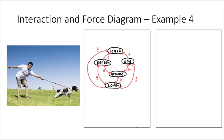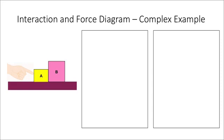If you'd like, you may stop the video here and move on to force diagrams. However, there is a complex example in the next two slides that I would recommend going over if you are able to do so. The next video will cover how to turn all these interaction diagrams into force diagrams. We'll end the video with a more complex example. In this scenario, I have two blocks — block A and block B — on a table. I'm going to push them from the left side to the right. Take a moment, pause the video, and see if you can list all the objects in this scenario.